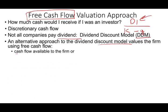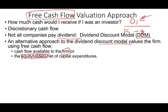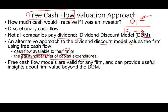The free cash flow is the cash flow available to the firm — available in the sense that they can do anything with it after committing to everything they need to pay for. It's all the cash available to the equity holders, the owners of the company, net of capital expenditure after investing what's needed to grow. Free cash flow models are valid for any firm because all firms will have cash flow, and it provides useful insight beyond the dividend discount model because cash is what matters.